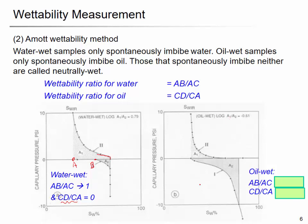If it is an oil-wet rock core, you will have a different graph: the spontaneous water imbibition AB/AC will be zero, but there will be some spontaneous oil imbibition — close to one. A value close to unity means a stronger tendency. That is the basic concept for measuring wettability — it is called the Amott wettability method.